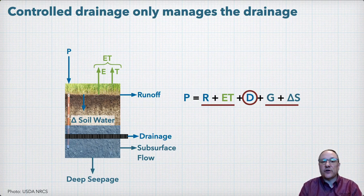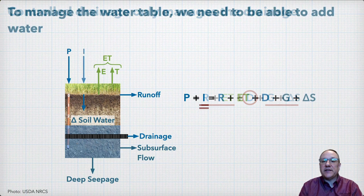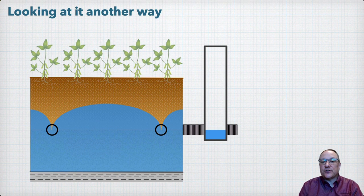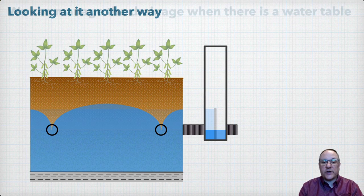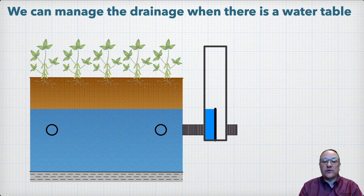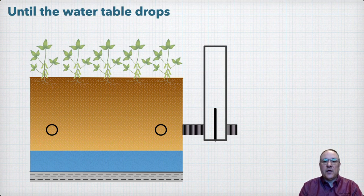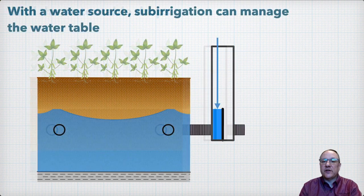If we wanted to actually maintain a certain water table depth, we'd need the ability to add additional water to the system through irrigation. In conventional or free drainage, water will drain from the system whenever the water table rises above the drains. With controlled drainage, we can manage the drainage and hold some of the water in the soil until the water table drops — for example, in the summer during periods when evapotranspiration exceeds precipitation. With an additional water source, we can use sub-irrigation by adding water back to the system to manage the water table.